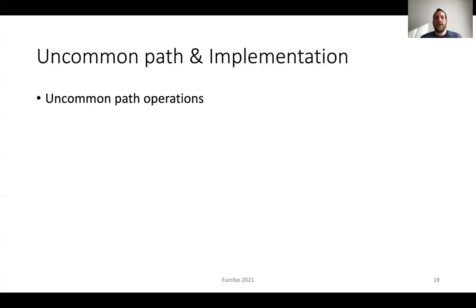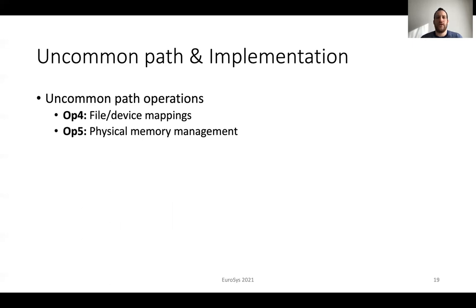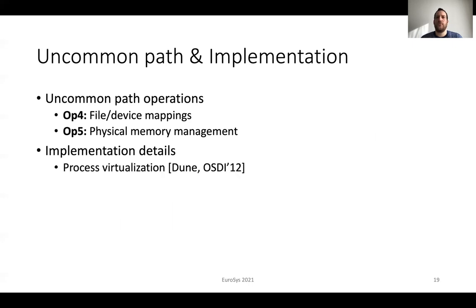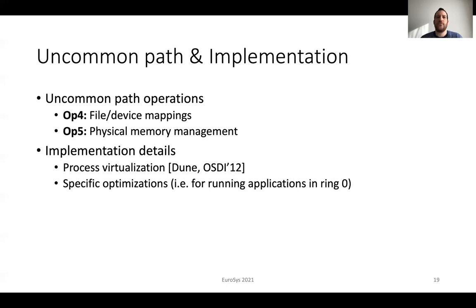Uncommon path operations are required for management purposes. This includes the fourth operation about file or device mappings and the fifth operation about physical memory management. In terms of implementation details, Akila uses DUNE for hardware virtualization and also provides specific optimizations, for example for running user applications in ring 0. More details on the uncommon path operations and other implementation details can be found in our paper.